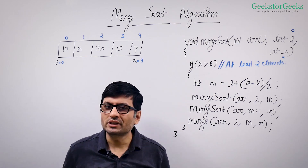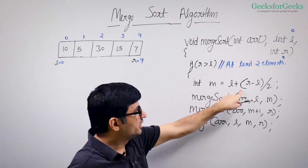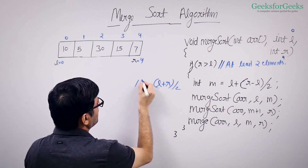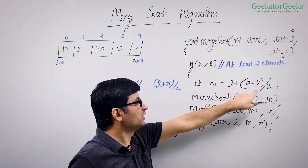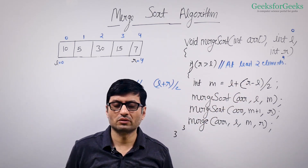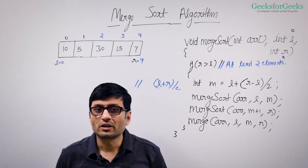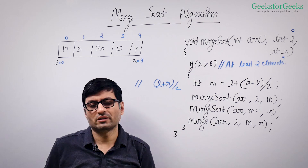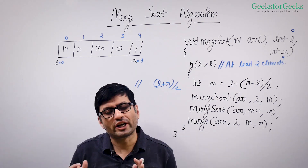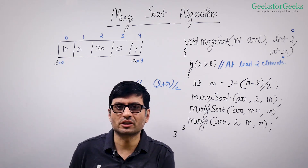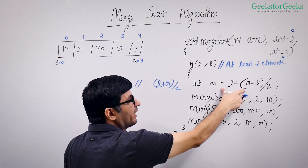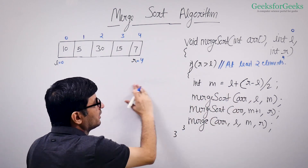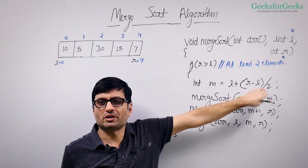After checking for at least two elements, we find the midpoint of our input. The expression I have written here is the same as L plus R divided by 2. The purpose of writing it this way is to avoid overflow. What happens in merge sort and binary search algorithms is that if they do L plus R divided by 2 and if L and R are high, there might be overflow for large arrays. We will discuss this in detail after we discuss the merge sort algorithm. The meaning of this expression is the same; the only purpose here is to avoid overflow.